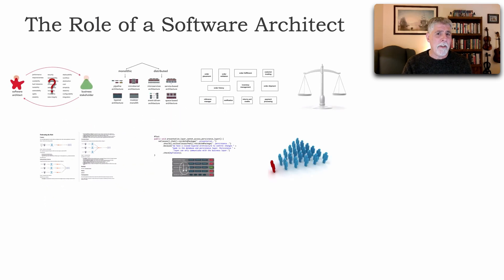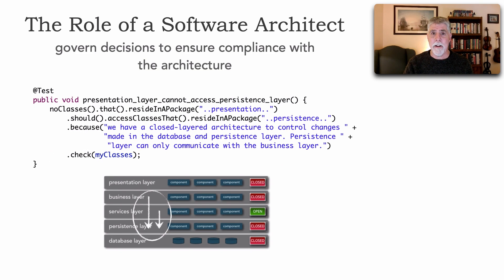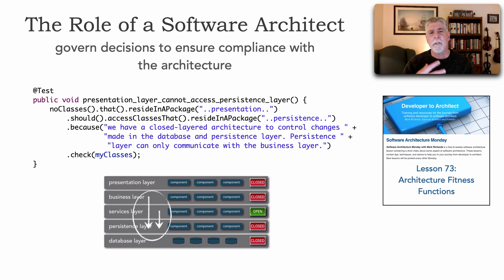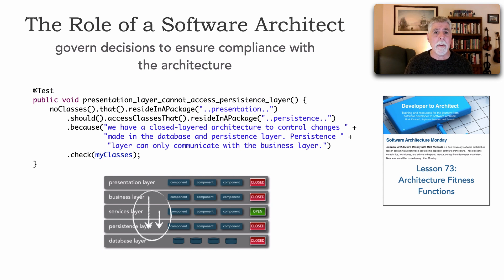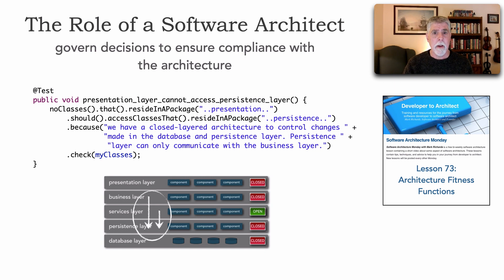Once we've made decisions, another thing an architect does is govern those decisions to ensure compliance with the architecture. I like to do so through automated fitness functions — lesson 73 covers those in more detail. Tools like ArcUnit, ArcUnitNet, and NetArchTest, or even custom code, can analyze the architecture and verify that decisions are being complied with. Most of the decisions I make as an architect, I try to automate, though some have to be manual checks. I strive for architectural automation of governance.